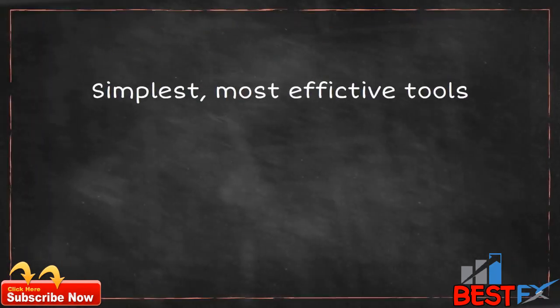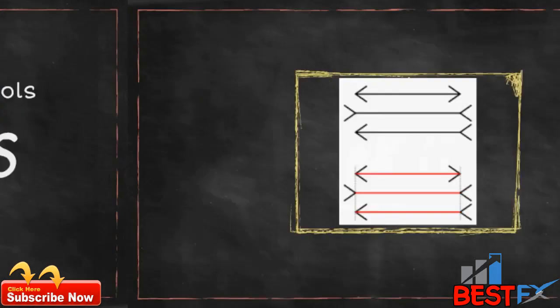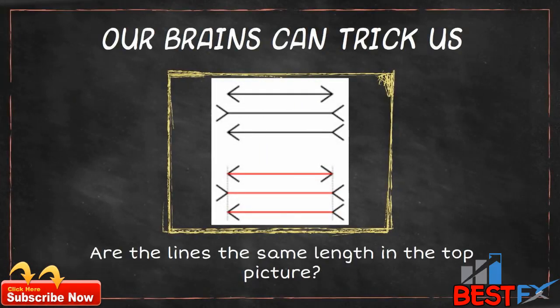One of the simplest and most effective tools in the entire world of technical analysis is that of trend lines. Our brains attempt to find patterns out of random noise. The concept of trend lines is instinctive. You may have already noticed how the support and resistance swings may line up in an upward or downward sloping line. This is a trend line — one of the simplest but most effective tools employed by technical analysts and chartists.